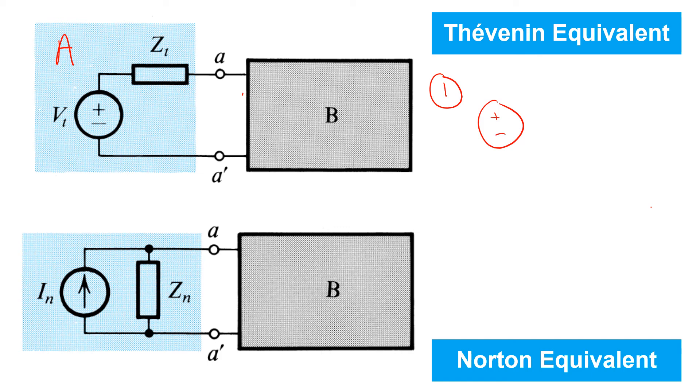We can do that by taking A and replacing B with the short circuit. The resulting current that flows is In, and it's obviously equal to Vt over Zt.